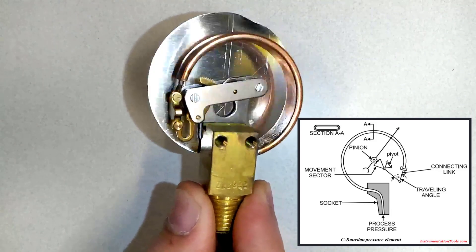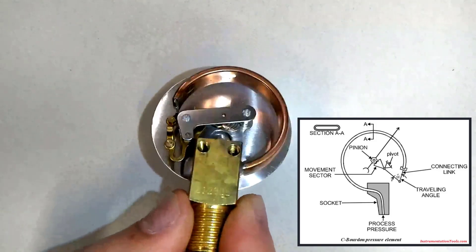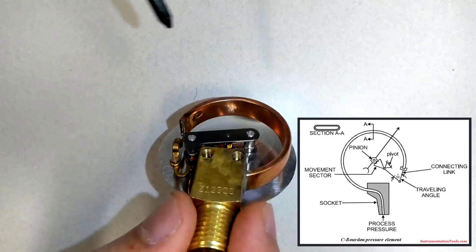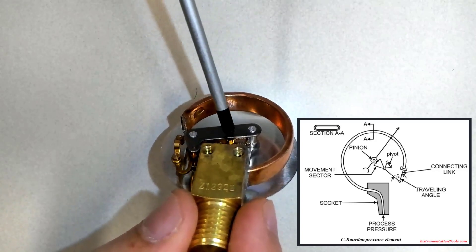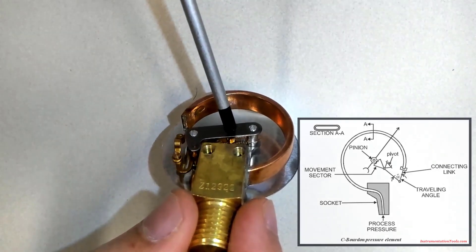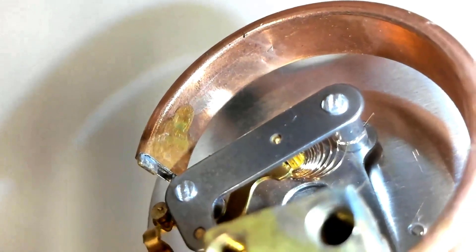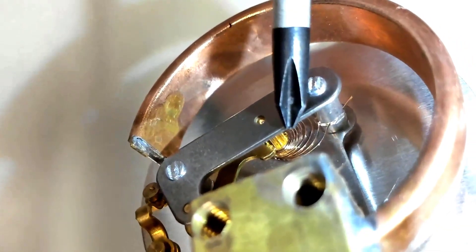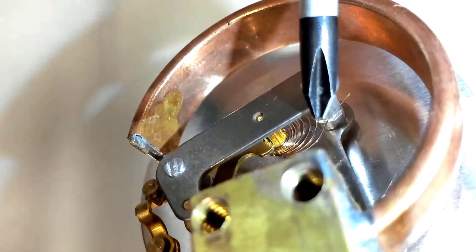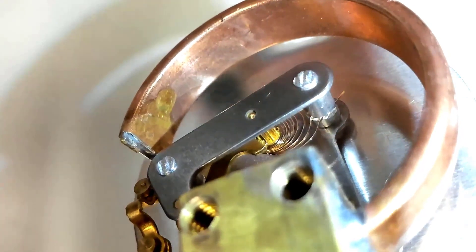Let me turn this so you can see the pinion. This little gold part right here is called the pinion. You can also see the spring over there as well.